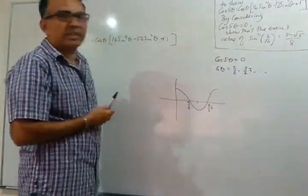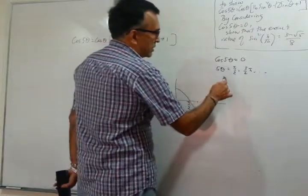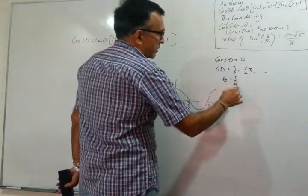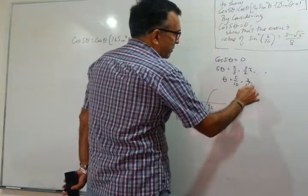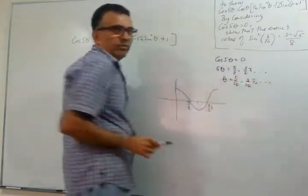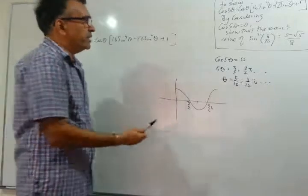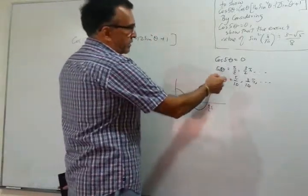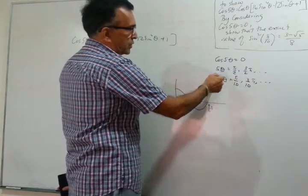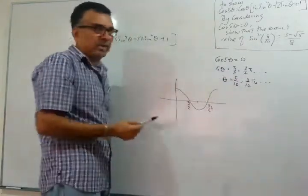I hope you see where π over 10 is coming from. So θ will be π over 10, and then we have 3 over 10 π, and so on. They're not keen on those values, we're just taking the smallest value.